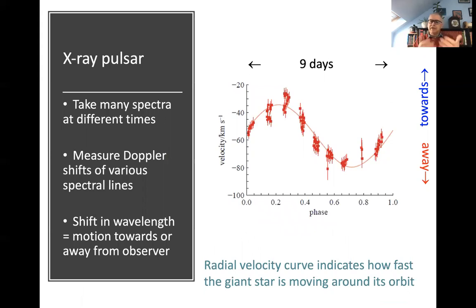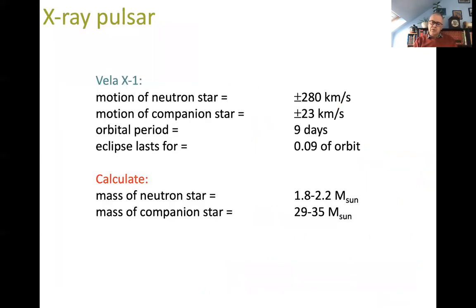We can also measure the speed of the giant companion star by looking at its spectrum. Absorption lines in the visible spectrum shift to longer wavelengths as the star moves away and to shorter wavelengths as it moves towards us — the Doppler shift. Converting those shifts to speed and plotting over the nine-day orbit shows the giant star alternately moving towards and away from us. Combining the neutron star's orbital speed from pulse timing, the companion star's speed from spectral Doppler shifts, the orbital period, and the eclipse duration — the neutron star passes behind the giant for about a tenth of each orbit — we can weigh both stars. The neutron star turns out to have a mass of about twice the Sun, and the giant star about 30 solar masses.